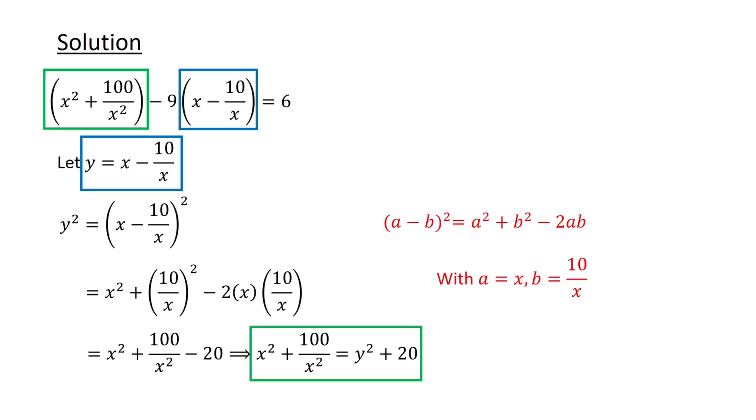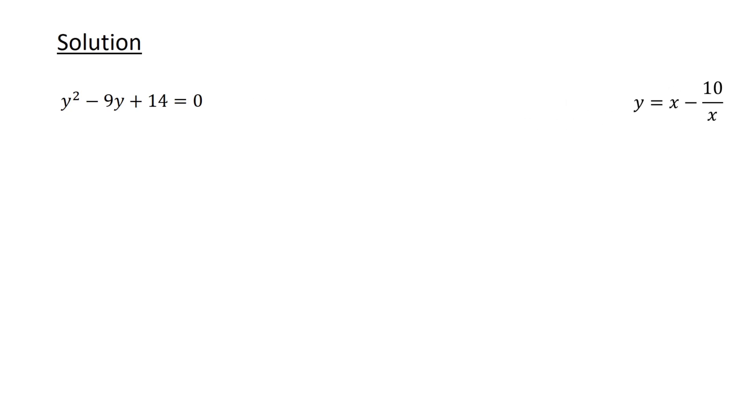Substituting this into our original equation, we obtain y squared plus 20 minus 9y equals 6. Or after subtracting 6 from both sides of the equation, y squared minus 9y plus 14 equals 0.